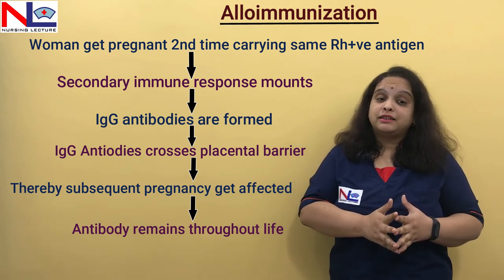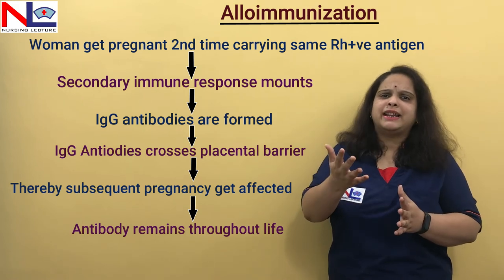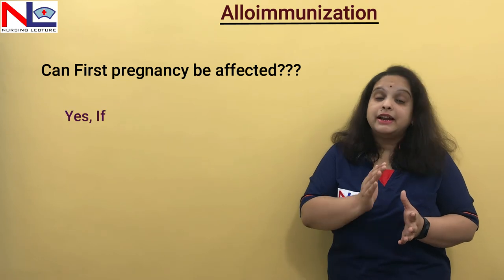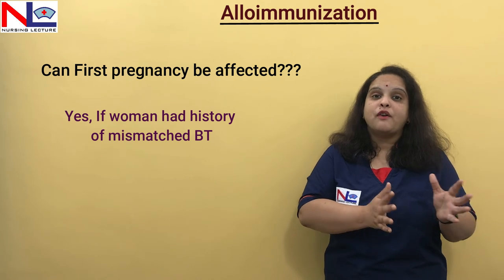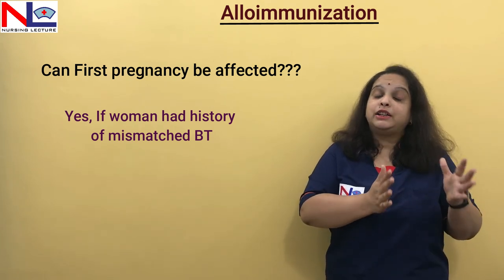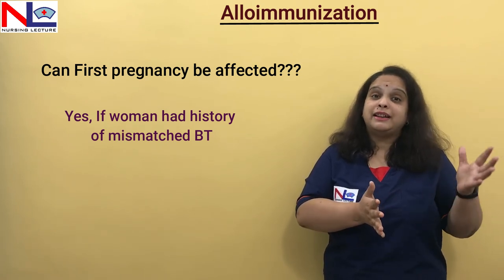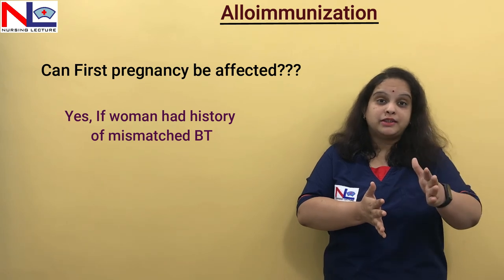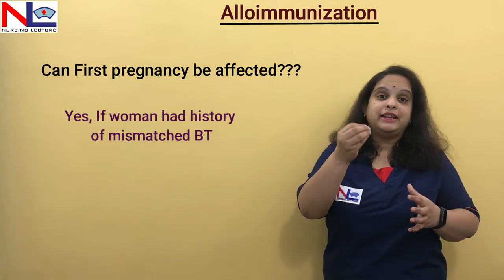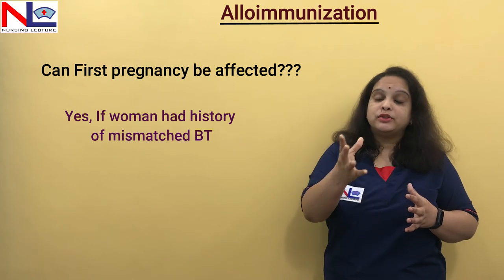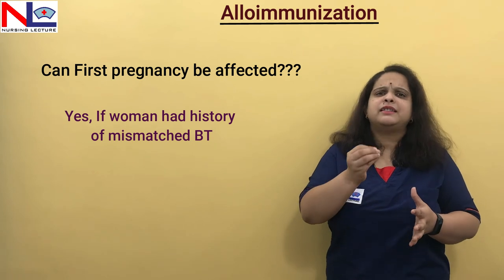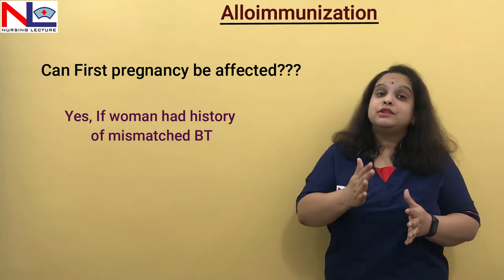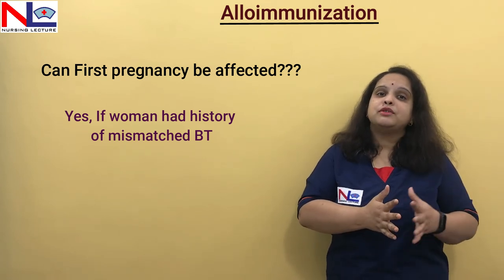The question that comes to mind is: usually the first pregnancy spares, the woman gets sensitized, and the subsequent pregnancy will be affected. But is it possible that the first pregnancy can also be affected? Yes, it is possible. It will happen if the woman had a previous history of mismatched blood transfusion — if an Rh negative woman had a transfusion of Rh positive blood. In such a situation, the woman is already sensitized from the mismatched blood transfusion, and once she gets pregnant for the first time, she already has that immune response triggered, which may create the formation of IgG antibodies and the first pregnancy can be affected. But this is a rare event.